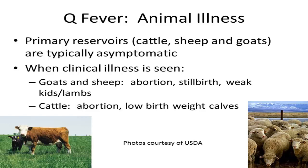For instance, in goats and sheep that become ill with Q fever, abortions, stillbirths, and weak kids and lambs are clinical signs that are frequently seen. In cattle with clinical signs associated with Coxiella burnetii infection, abortion and low birth weight calves have been reported.